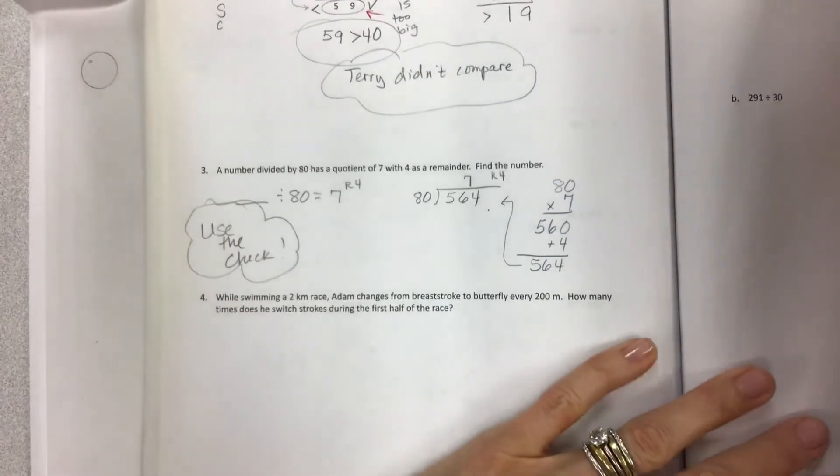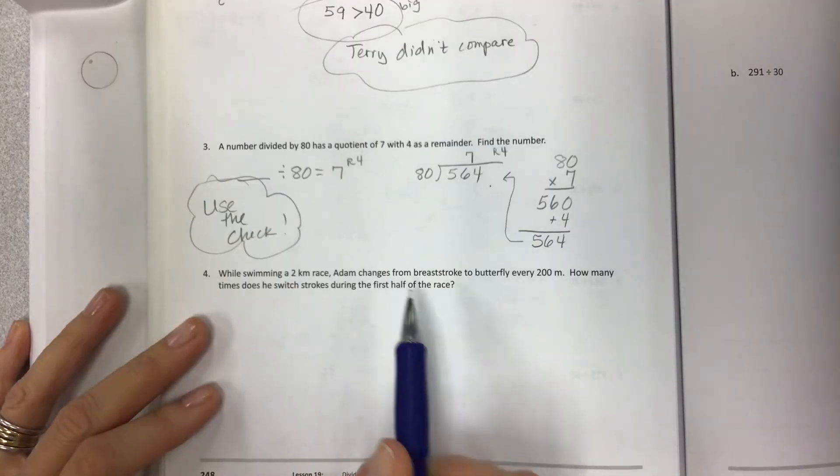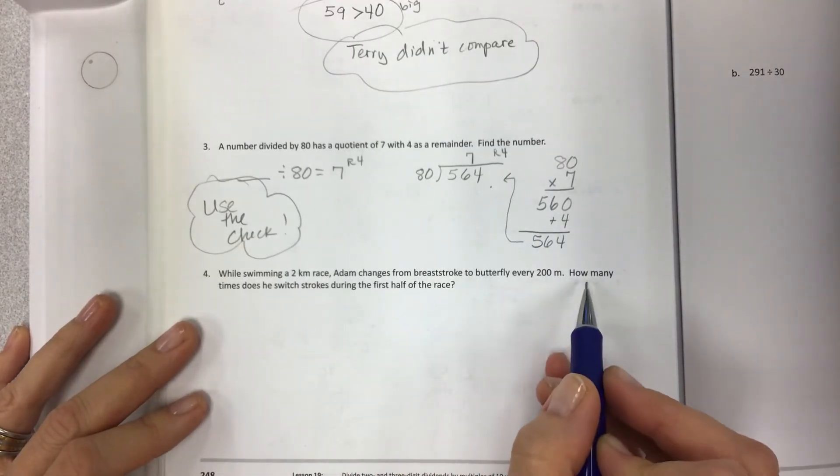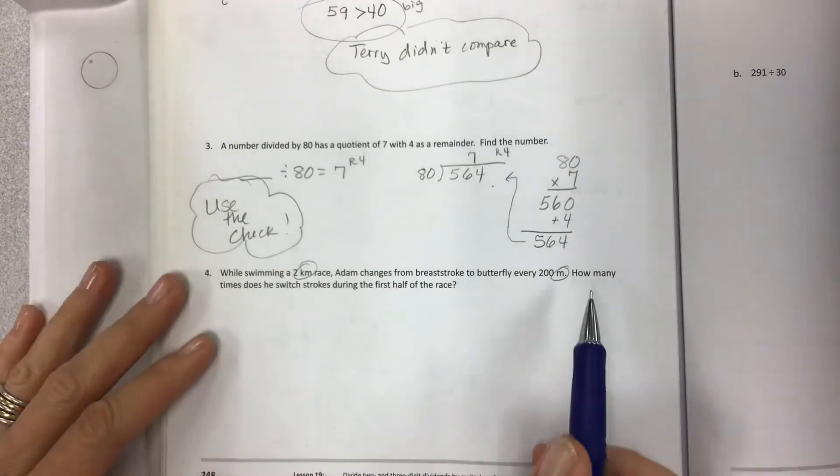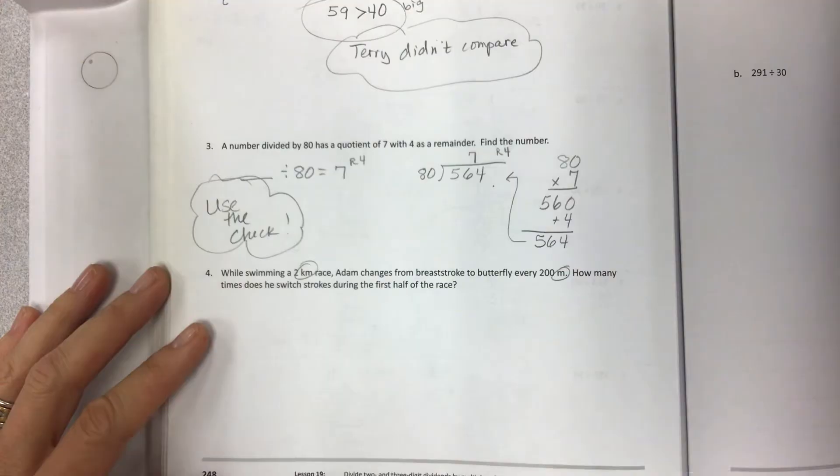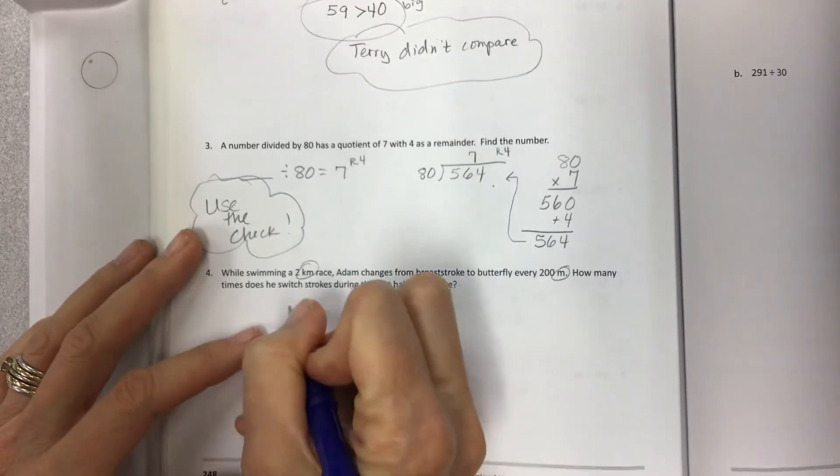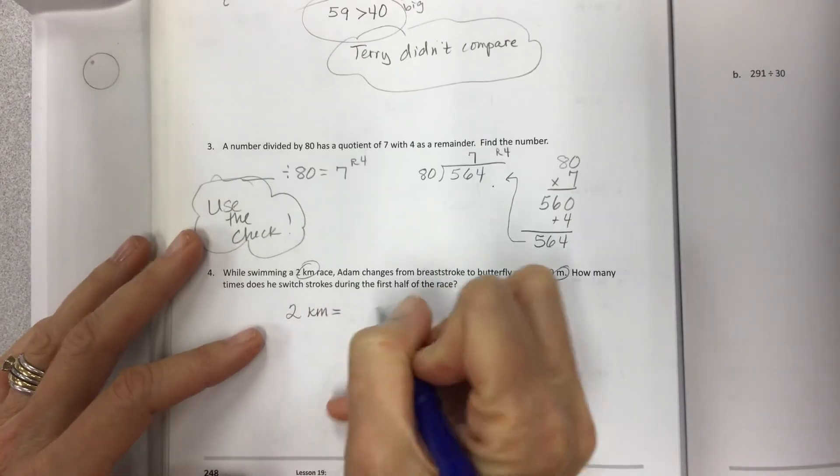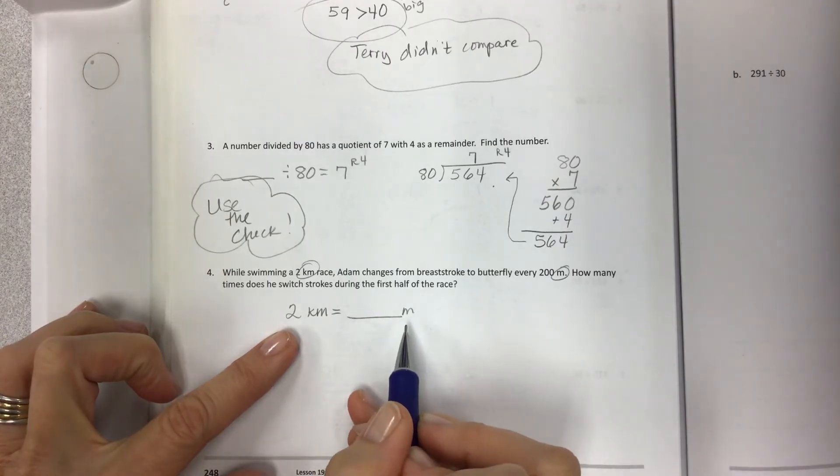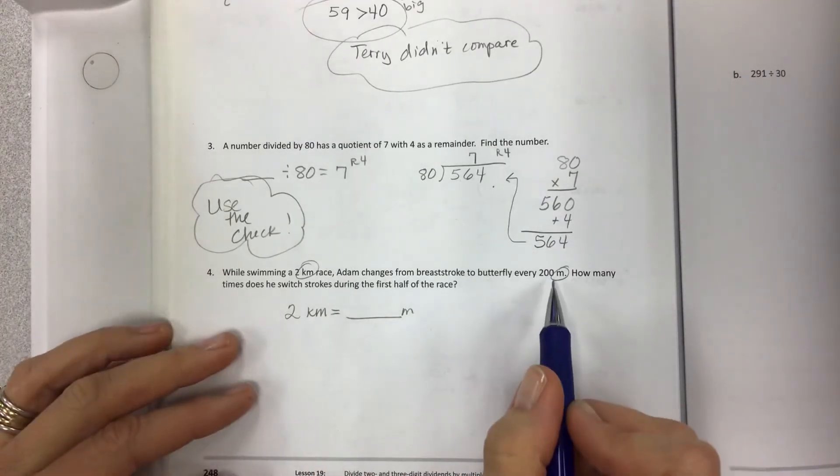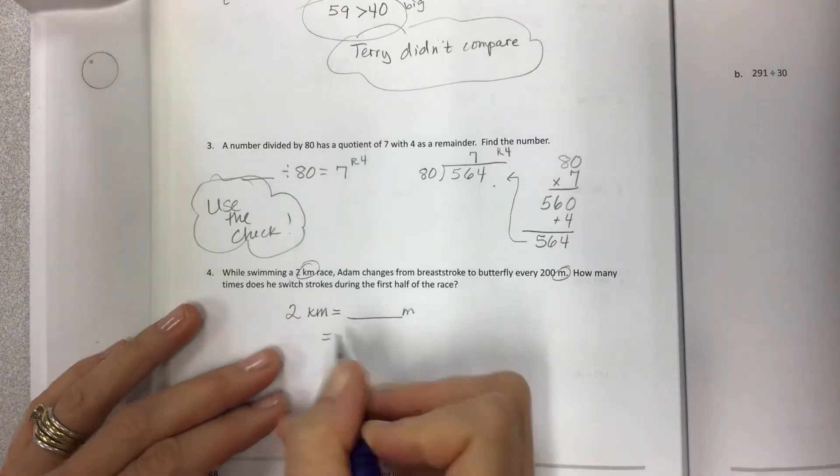Last problem already. Hooray! While swimming a 2 kilometer race, Adam changes from breaststroke to butterfly every 200 meters. Notice K, M, and M. Watch out. How many times does he switch strokes during the first half of the race? So first of all, let's make everything in the smaller unit. So I want to know how 2 kilometers would be how many meters. Because if everything is much more specific, I always like to use the smaller units if I can. So how do you do this? Remember, it's 2 times 1 of the old, and then same 2 times the equivalent of the new.